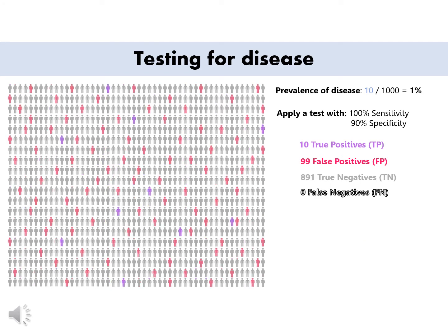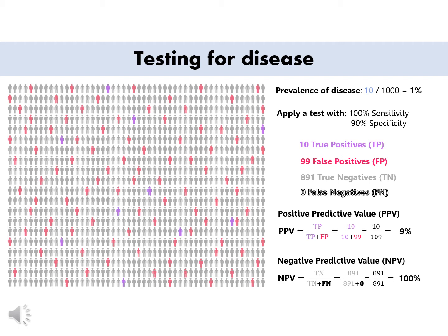Now in the next scenario, I portray the same population but the prevalence is much less at 1%. Applying the same calculation, there will be 10 true positives, 99 false positives, 891 true negatives, zero false negatives, and the positive predictive value will be 9%, and the negative predictive value will be 100%. This example shows that only by changing the prevalence from 10% to 1%, if you are positive for the test, your chances of having the disease are reduced from 55% to 9%.